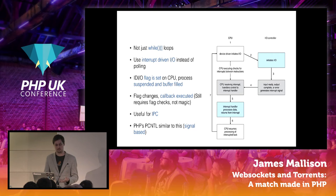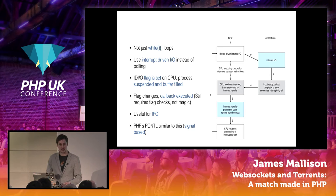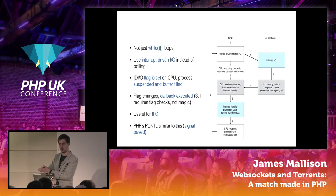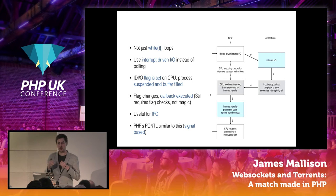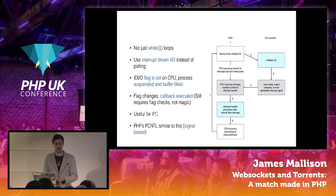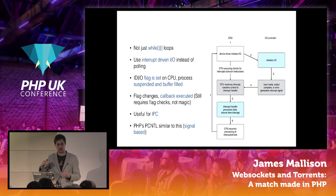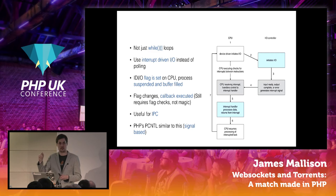Instead we can use interrupt-driven IO. With interrupt-driven IO, a flag is set on the CPU so the big event loop can continue happening, while the process getting the information is suspended. Once we get the information, it changes the flag back and is put back into the event loop. The event loop isn't saying 'have you finished yet?' — it's the source of the data that just says 'yes, we've finished.' We need to get out of the mindset of procedural code and think about jumping around, which is what an event loop allows. This is also useful for inter-process communication.